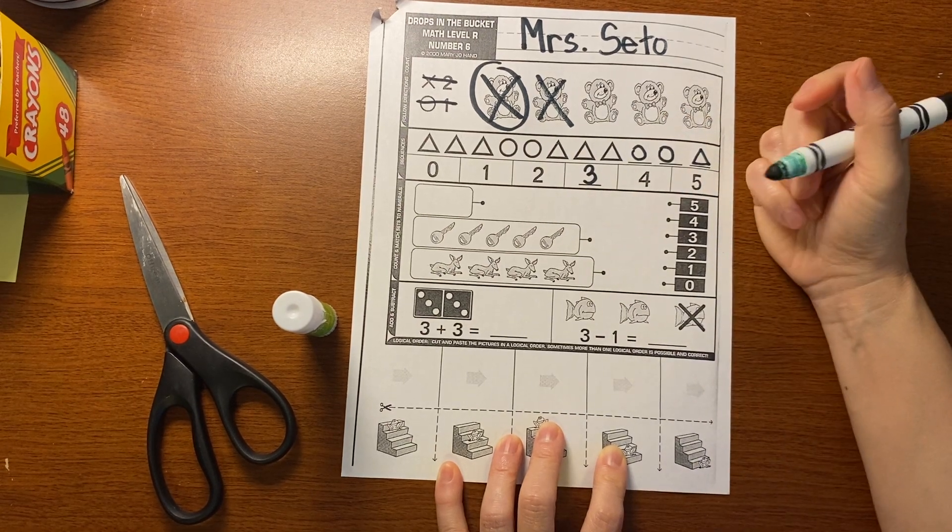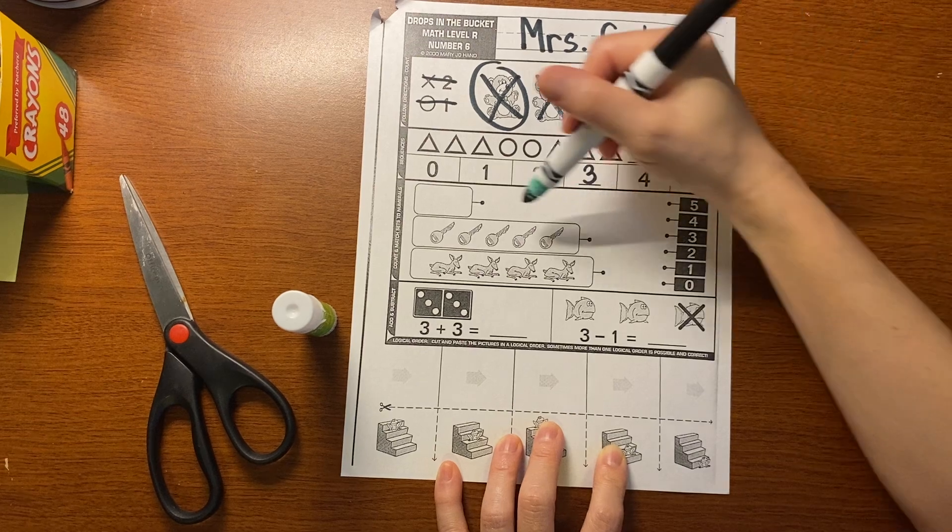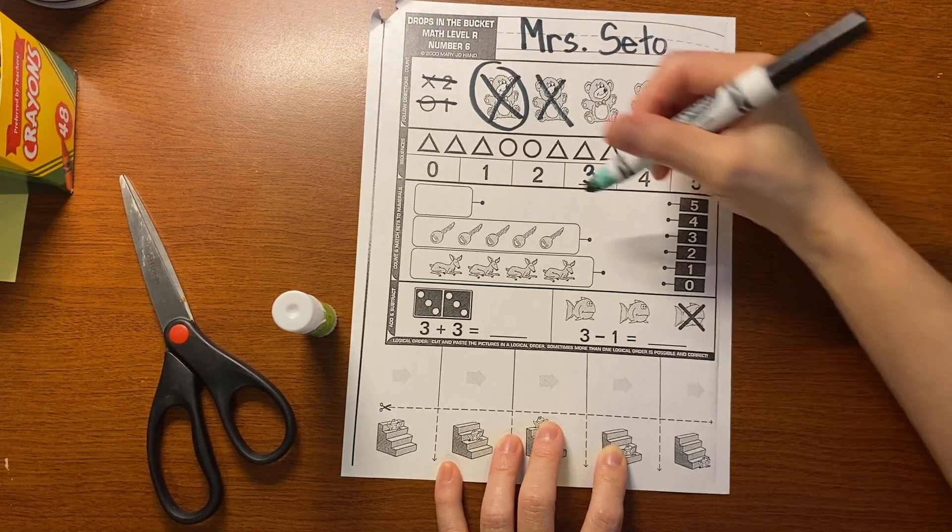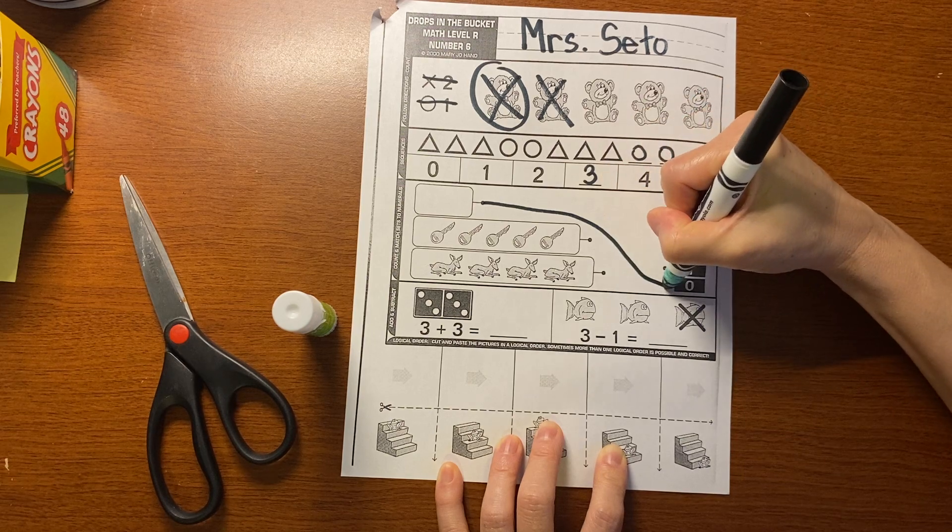Three is missing. Now we have to match up the pictures with the numbers. There is zero here, so I'm going to match this to zero, which is on the bottom.